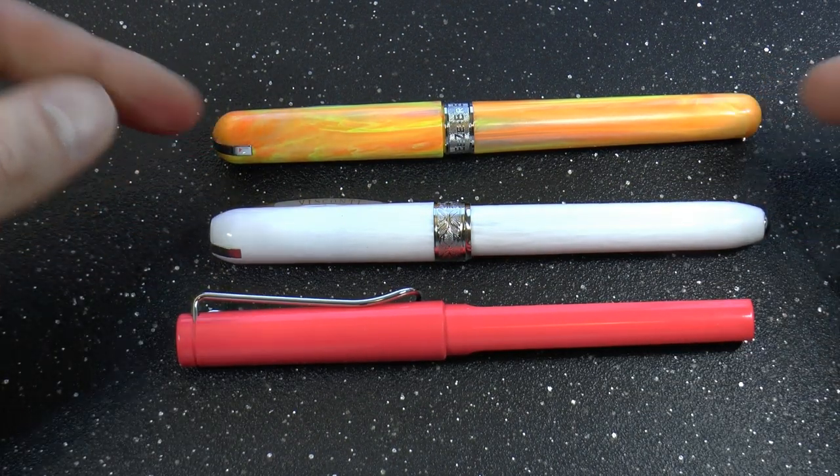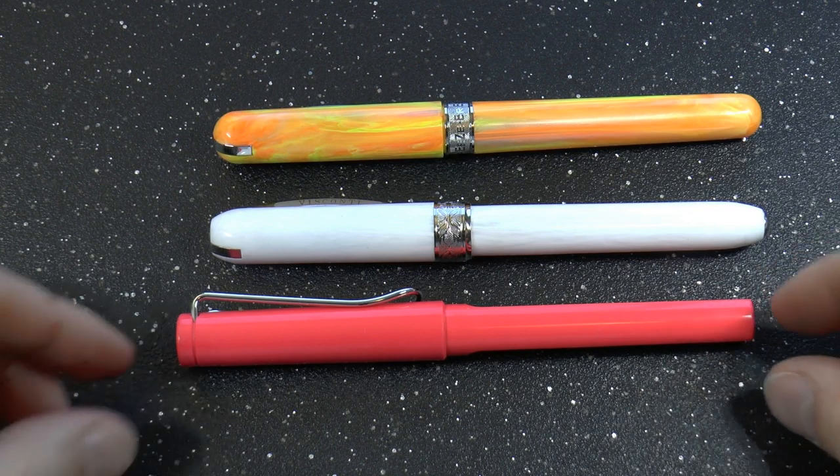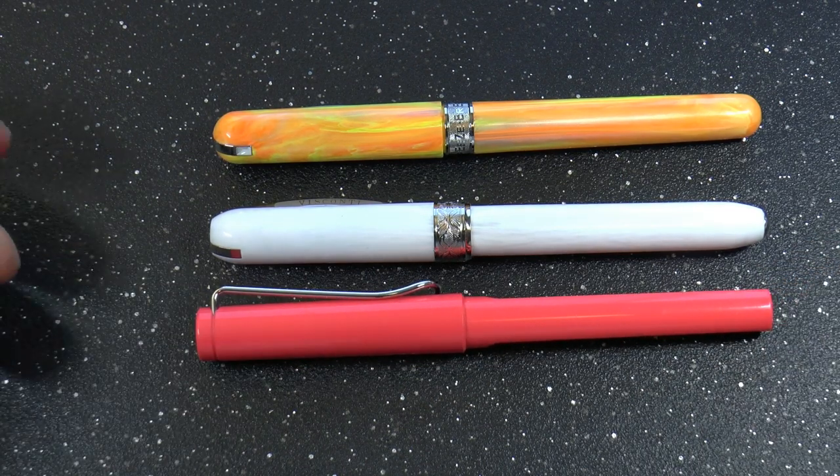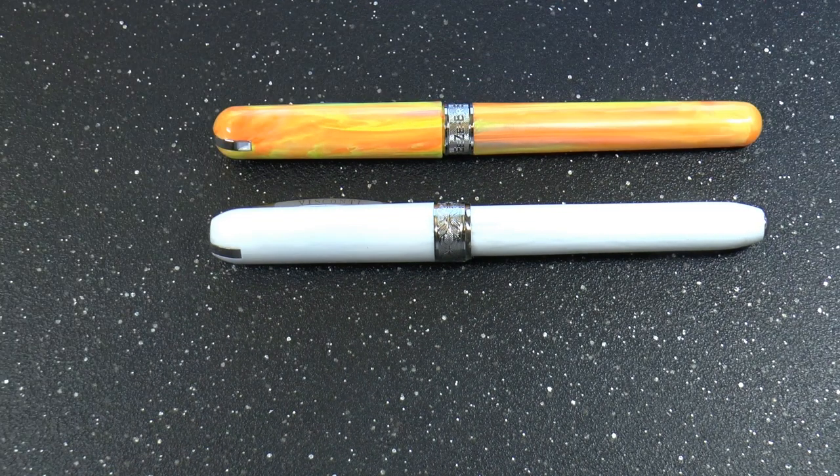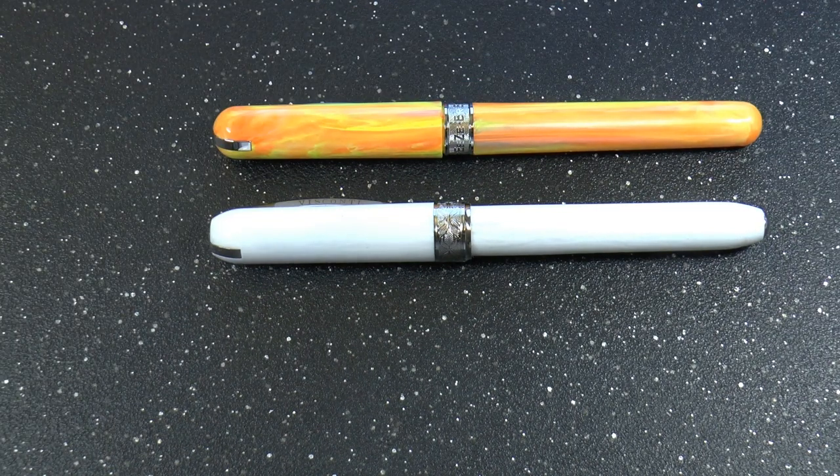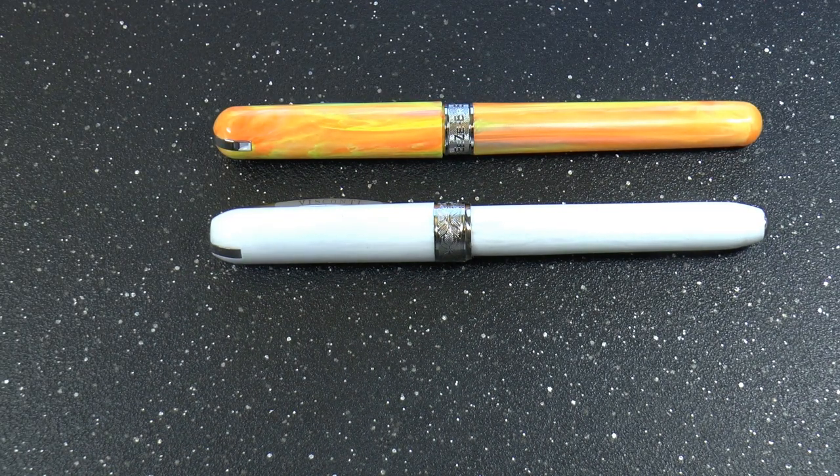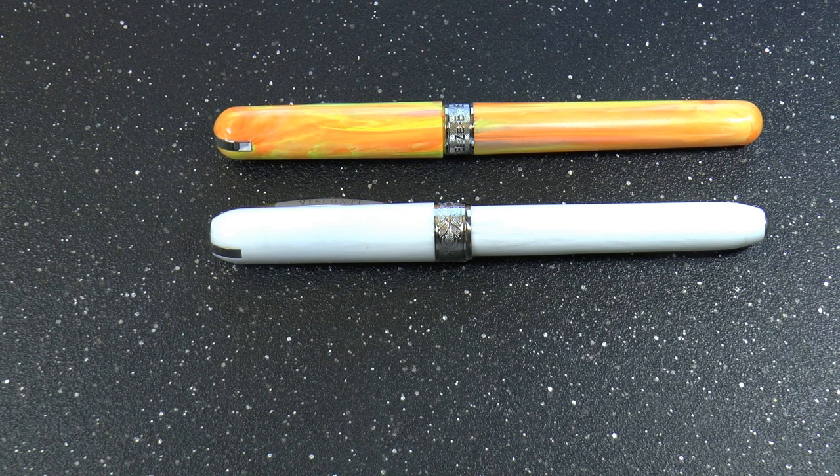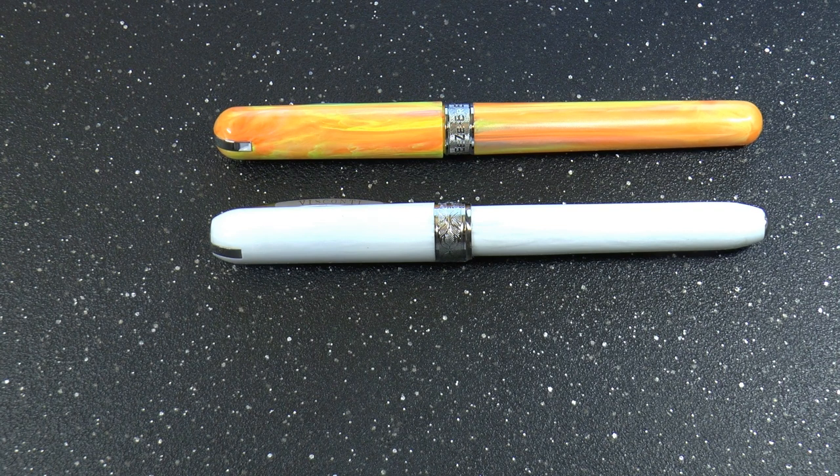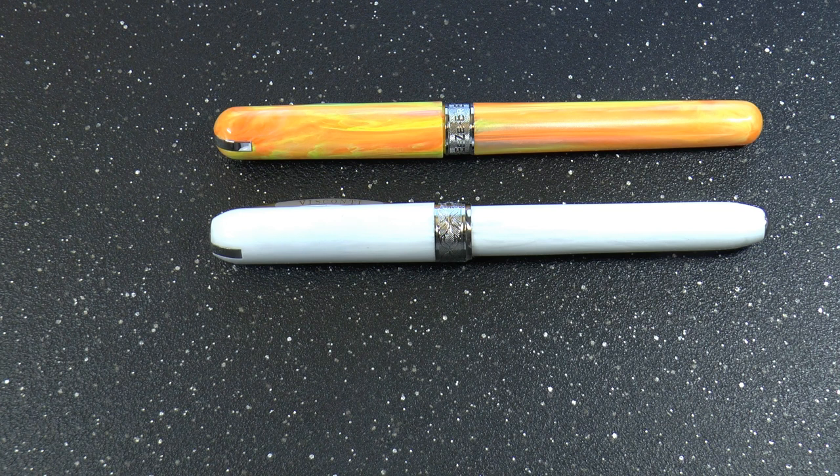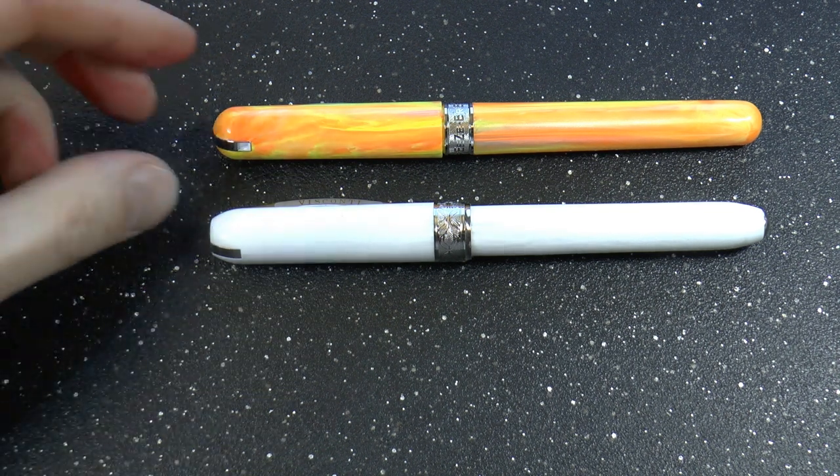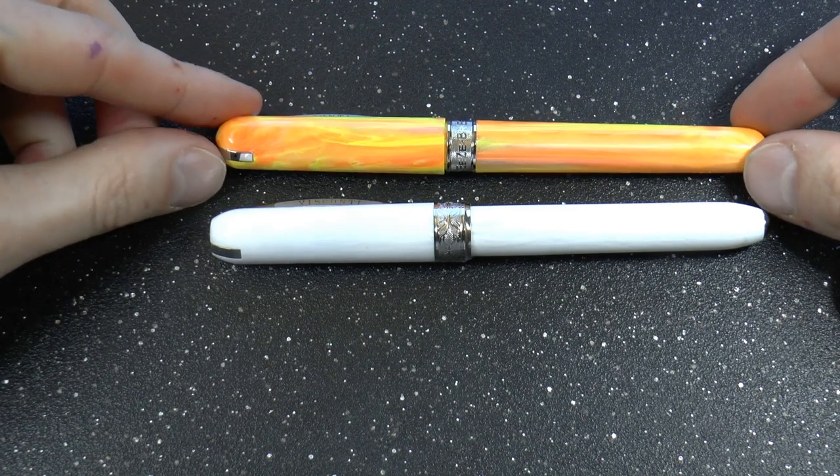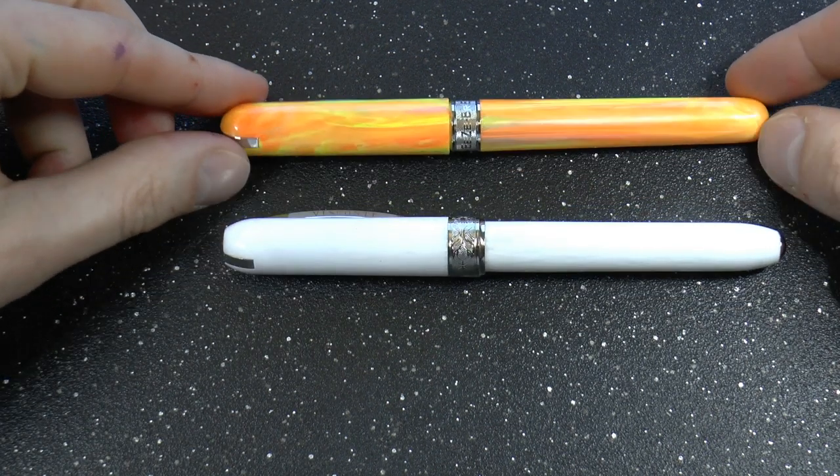So here we have the Rembrandt on top, we have the Breeze and then we have the Lamy Safari as a size comparison. As you can see they are roughly similarly sized pens. The Breeze costs 100 euros, has fine, medium or steel nibs, cartridge converter filled, comes in a bunch of different cool finishes, and was sent to me by, or was lent to me, I should say, by Joost Appelbaum of Appelbaum Penner. So that is kind of nice.